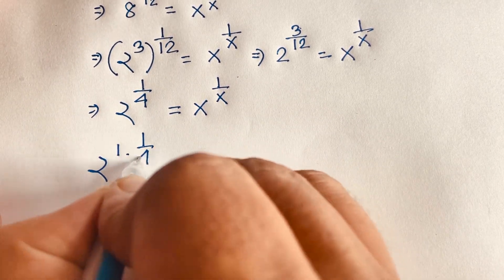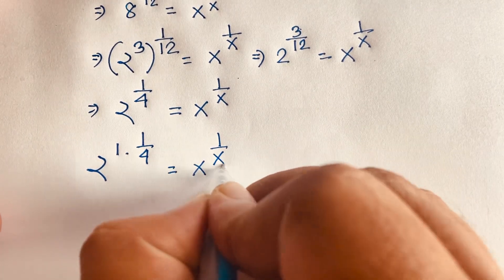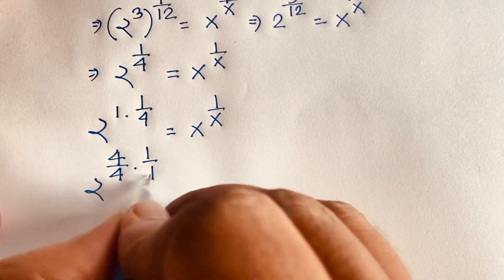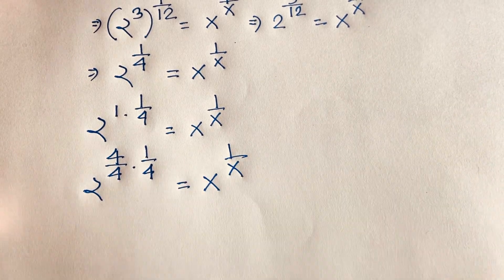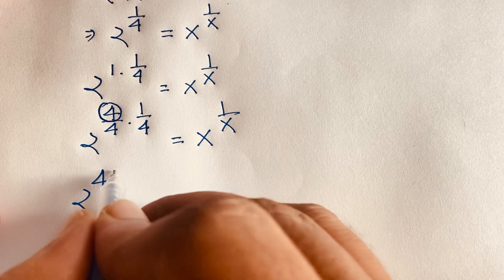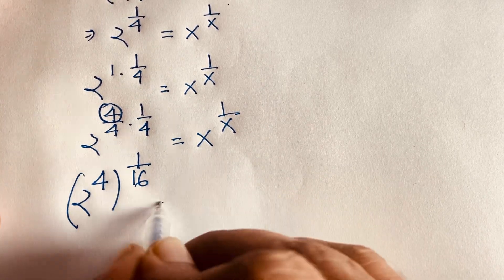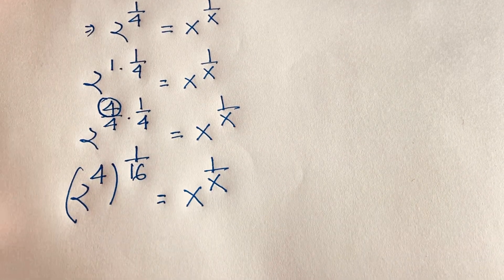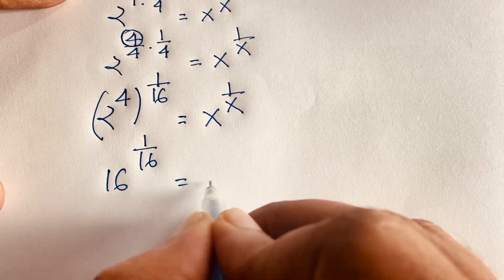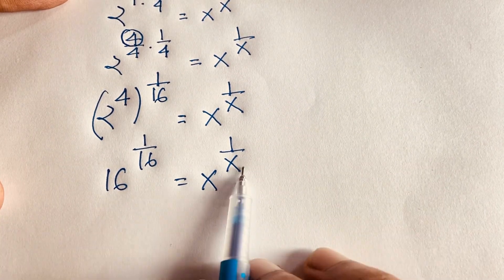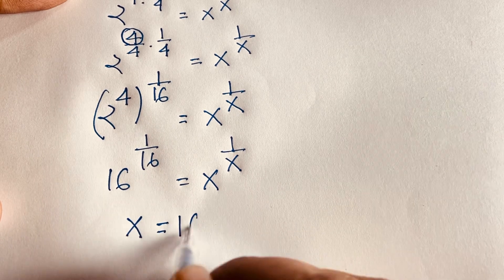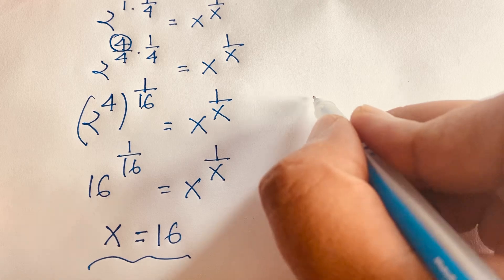I rewrite the left side: 2 to the power 4 is 16, and 1 over 4 times 1 over 4 gives 1 over 16. So this becomes 16 to the power 1 over 16 is equal to x to the power 1 over x. Since both sides are in the same form, by the exponential law, x is equal to 16. This is our final answer.